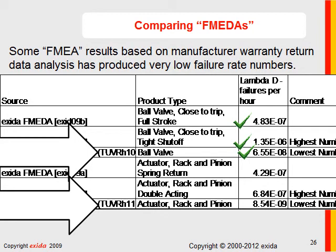For actuators, Exeter has a spring return rack and pinion actuator at 4.29e-7 and a double-acting rack and pinion actuator at 6.84e-7 failures per hour. Another set of data based on an FMEA using manufacturer's warranty data showed 8.54e-9 — approaching two orders of magnitude too low. If someone uses a particularly optimistic failure rate, they could be designing a system that is not safe enough.